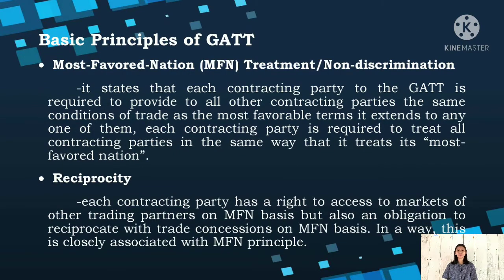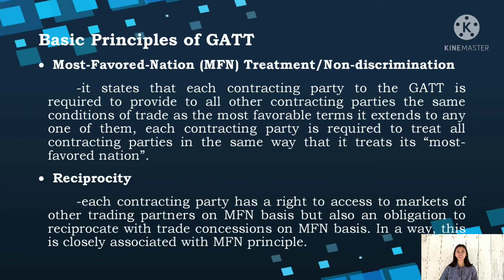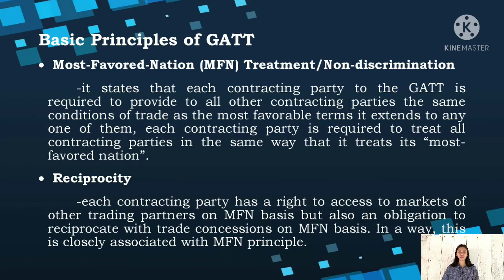These are the basic principles of GATT. First, Most Favored Nation treatment or non-discrimination. It states that each contracting party to GATT is required to provide to all other contracting parties the same conditions of trade as the most favorable terms it extends to any one of them. Each contracting party is required to treat all contracting parties in the same way it treats its most favored nation. The central principle of non-discrimination is to prevent protectionist measures and guarantee the freedom of trade among all member states. Second, Reciprocity: each contracting party has a right to access markets of other trading partners on an MFN basis, and an obligation to reciprocate with trade concessions on an MFN basis. This means a country which takes new steps towards liberalization, granting trade advantages to another member state, receives in turn equivalent privileges from the favored state.